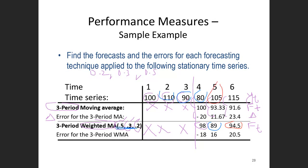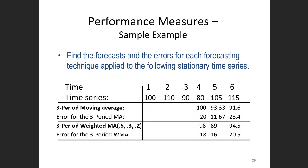For the third forecast: 0.5 multiplied by 105 plus 0.3 multiplied by 80 plus 0.2 multiplied by 90 equals 94.5. The errors for the weighted moving average method are: 80 minus 98 equals minus 18; 105 minus 89 equals 16; 115 minus 94.5 equals 20.5.